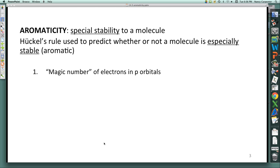There are four criteria that make a molecule aromatic. This first one, which I'm calling the magic number, is really Hückel's rule. That there's a special number, a magic number, of electrons in p-orbitals. The molecule must be cyclic. The molecule must be planar. And the molecule must be conjugated.